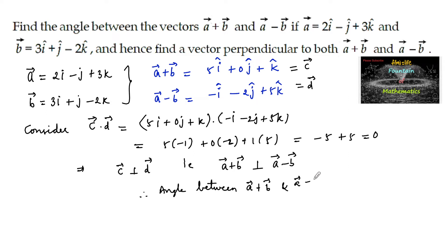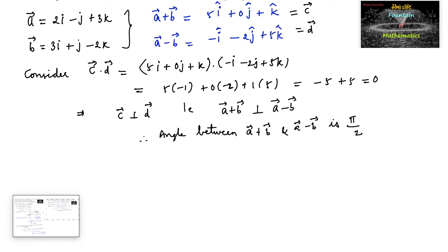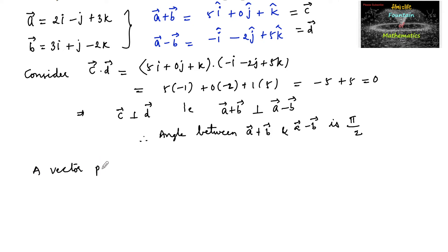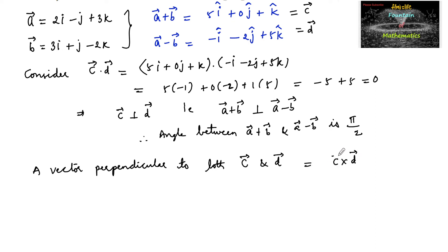Therefore, the angle between vector a plus b and vector a minus b is 90 degrees or pi by 2. Now we need to find a vector perpendicular to both a plus b and a minus b. A vector perpendicular to both c and d can be considered as c cross d, since the cross product c cross d is perpendicular to both vectors c and d.